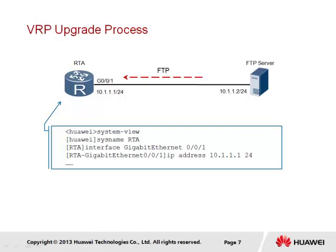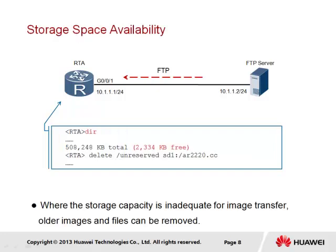Here we give an example of how the upgrade process is performed in the case that the device supporting VRP acts as a client and wishes to connect to a server that supports file transfer. The first steps involve establishing the system name for the device and assigning an IP address to allow IP communication between the router and the server. In this example, the router named RTA acting as a client and the FTP server are assigned as part of the same network. The address 10.1.1.1 with the mask of 255.255.255.0 is configured on RTA, as understood from the /24 prefix value. Prior to the transfer of files from the FTP server, it is imperative to ensure that there is enough physical space available in the system storage of the client.